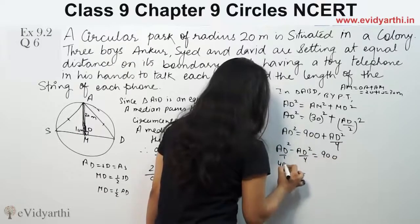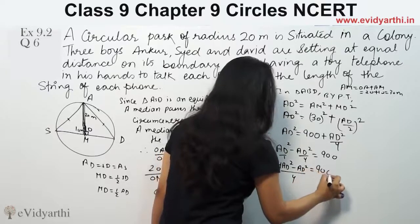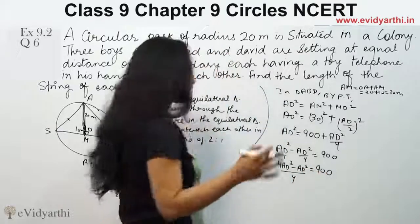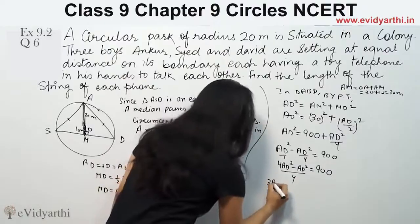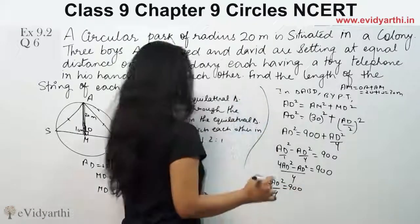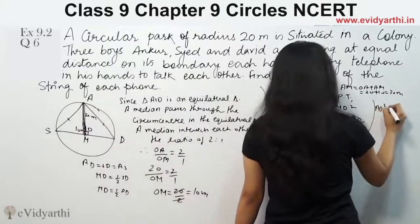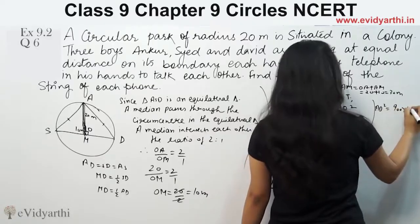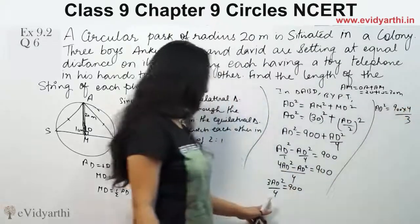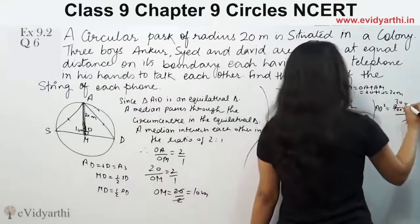So 4 will come down. This will be 4 AD square minus AD square equals 900 into 4. We can take AD square common. So 3 AD square by 4 equals 900. So from here we have AD square equals 900 into 4 by 3. Taking the reciprocal, 3 cancels with 3.